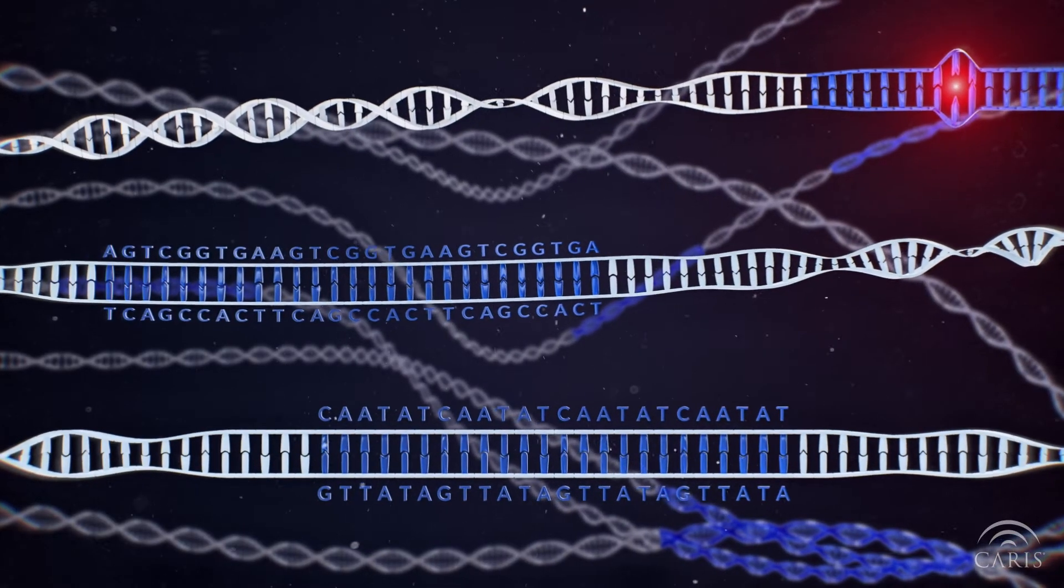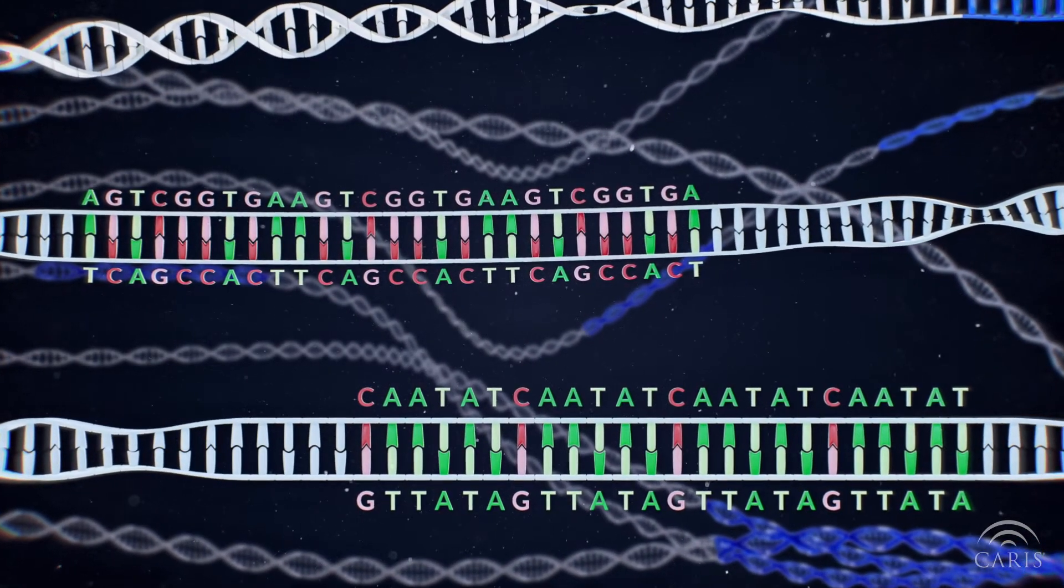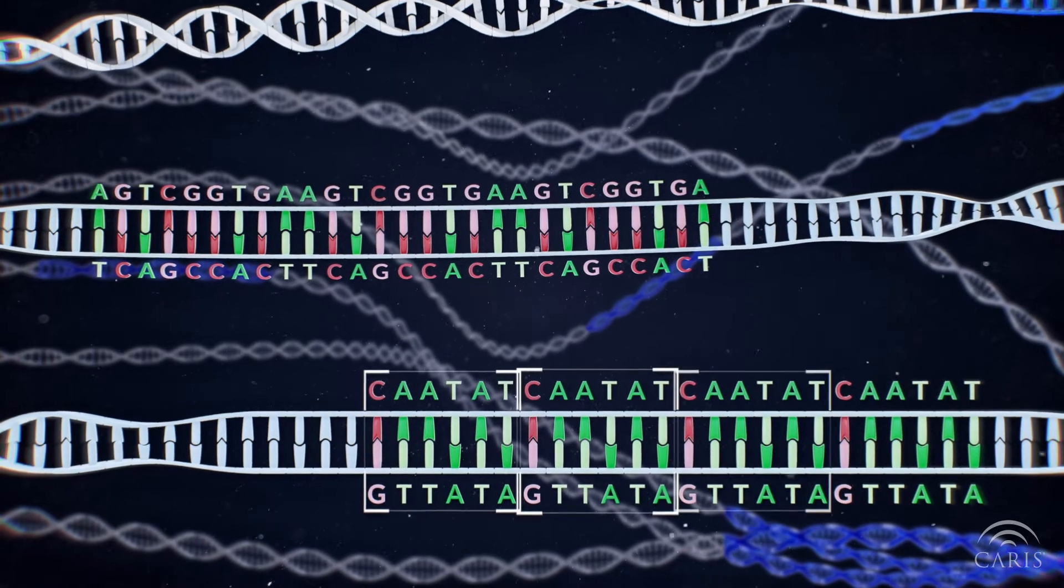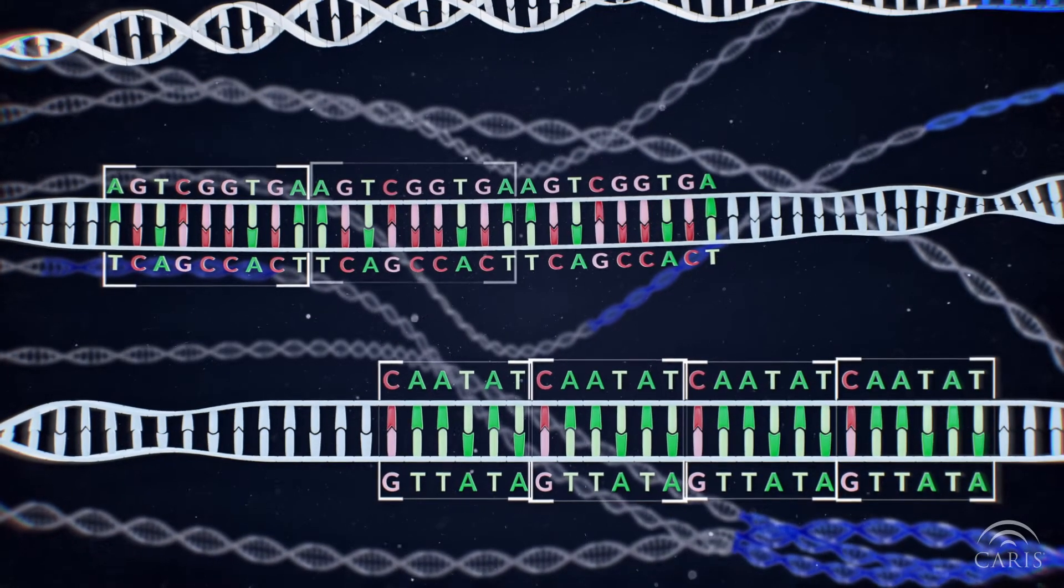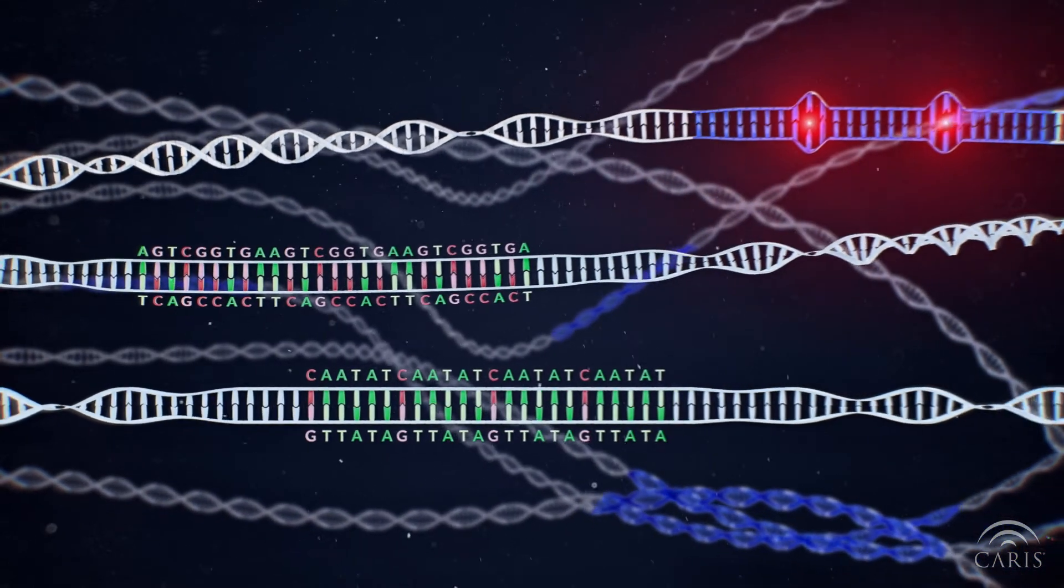Specific areas of DNA are short, repeated sections of the genetic code called microsatellites. Microsatellites are usually made up of six to ten base pairs and can occur thousands of times throughout the entire DNA code.